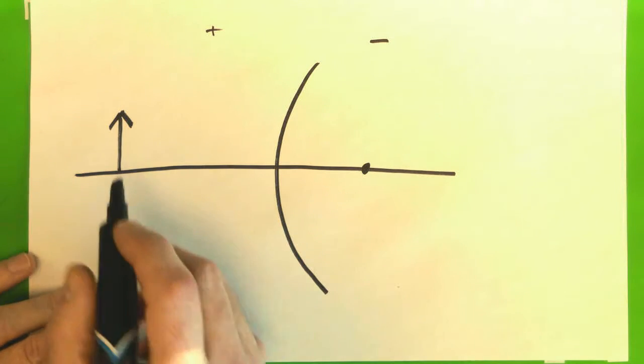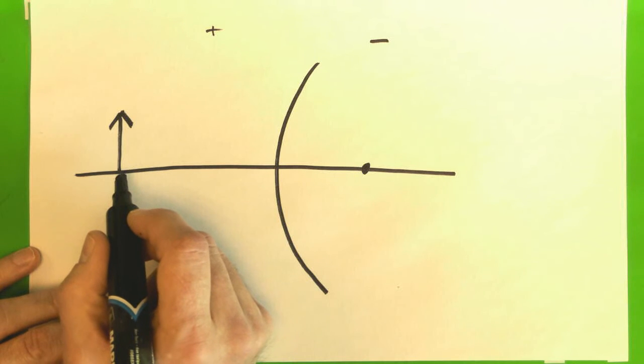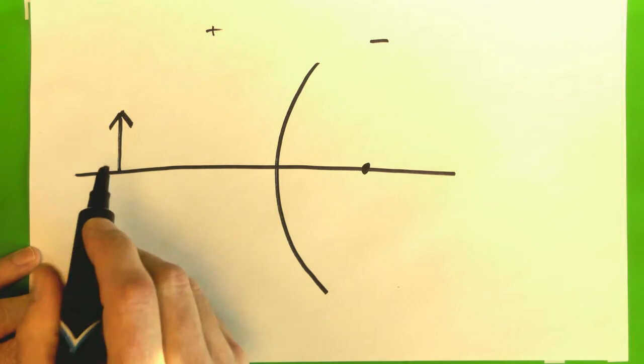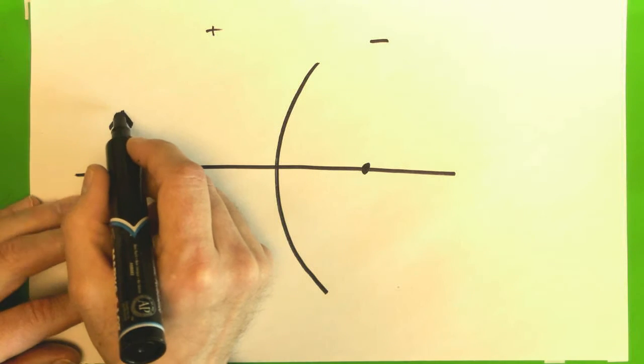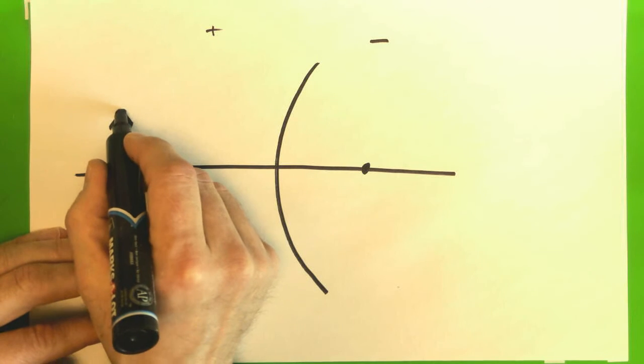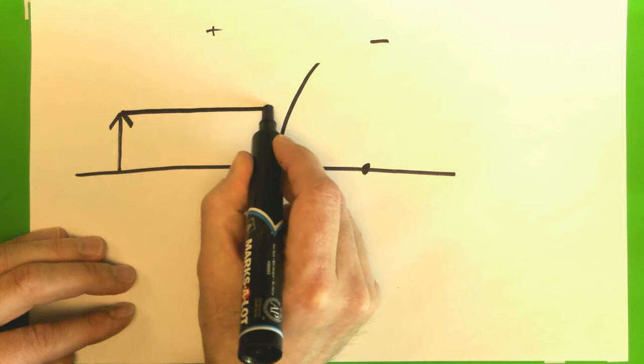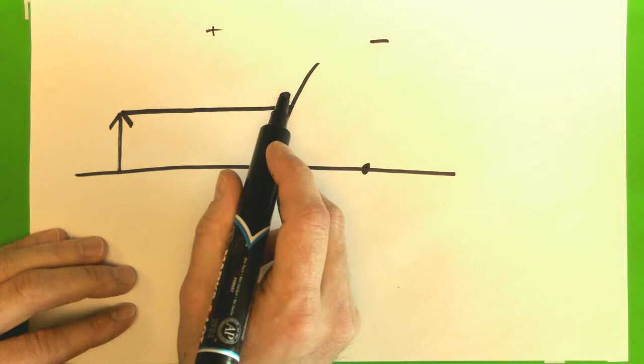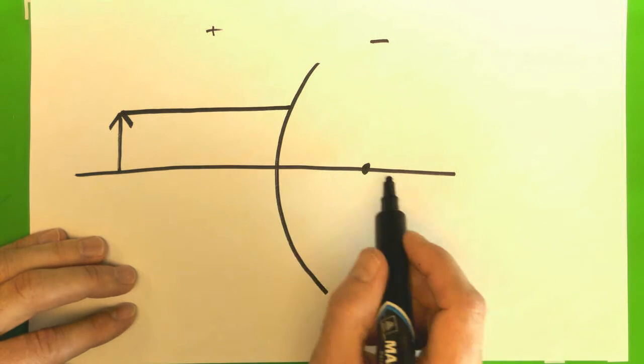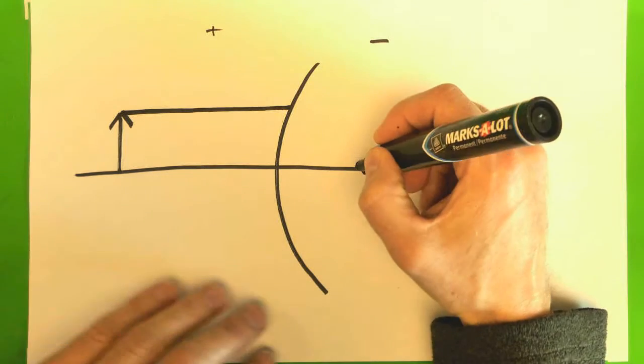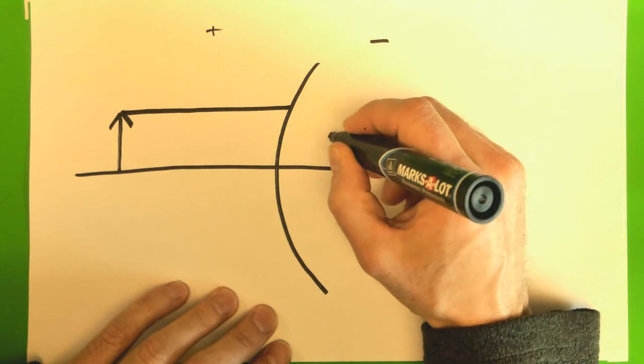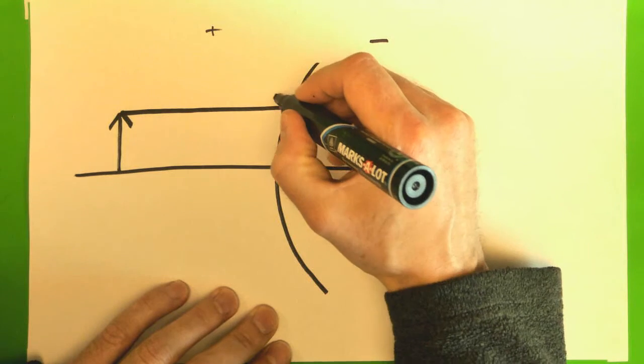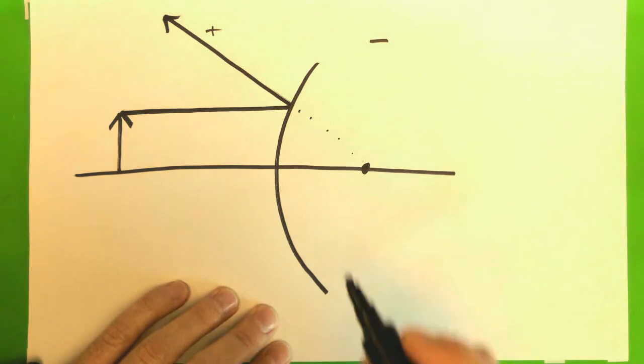So how do we figure out where an image is going to be? We do the same set of rules. We have one ray coming in parallel, and it reflects off this mirror, and it needs to go through that focal point, or in this case, away from that focal point. So it's going to travel away from it.